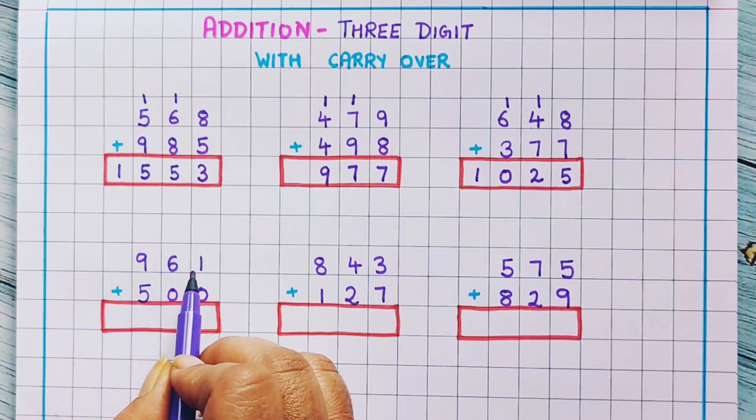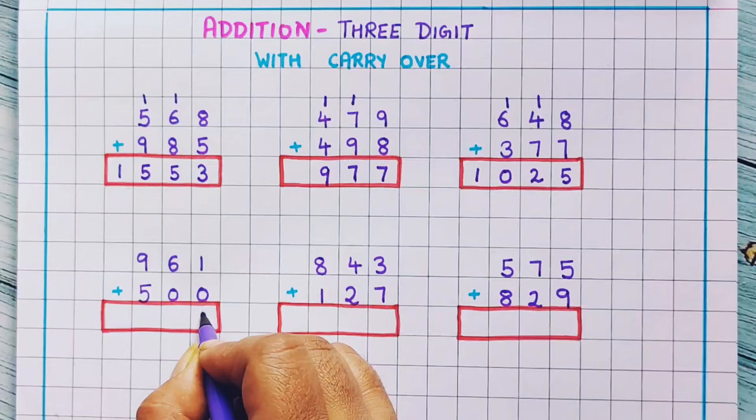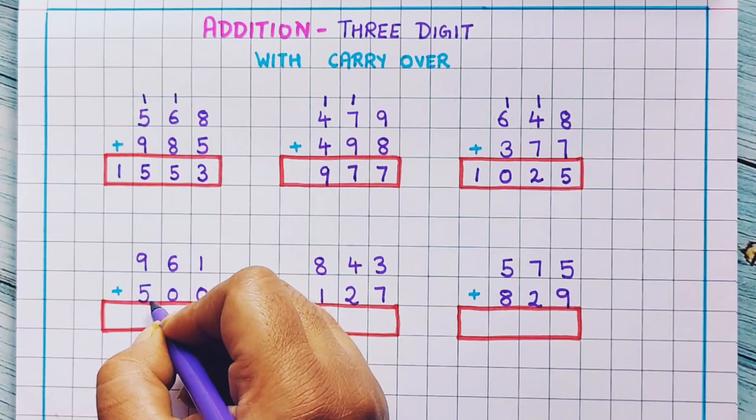Next problem: 961 plus 500. Now 1 plus 0 is 1, 6 plus 0 is 6, and 9 plus 5 is 14. So here I will write 14, giving the answer 1461.